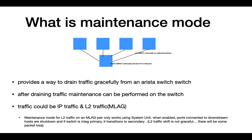In this topology shown with the blue boxes, let's say you want to carry out maintenance on the box on the top right. When the switches are configured with maintenance mode, that switch sets the G-SHOT community on outbound prefixes, and then any switch connected to that particular switch will match the G-SHOT community and set the local preference to 0 by default on Arista switches. So after a certain period of time, traffic will be drained from that link, and then you'll be able to carry out maintenance as planned.